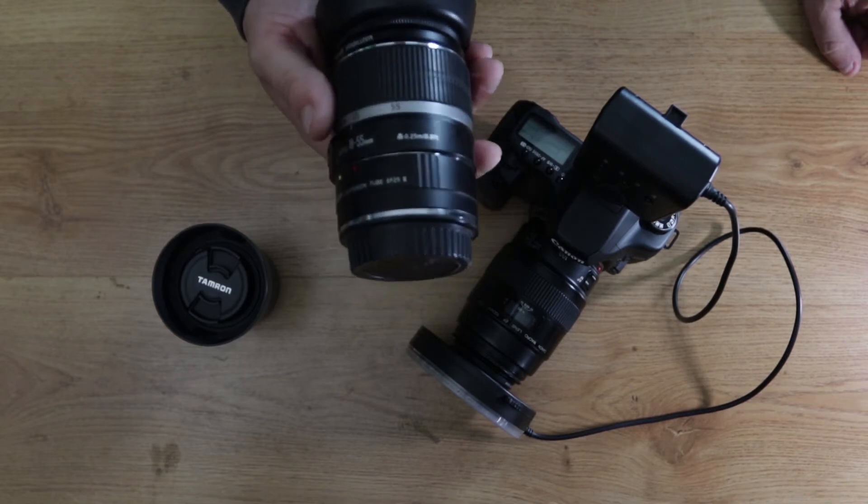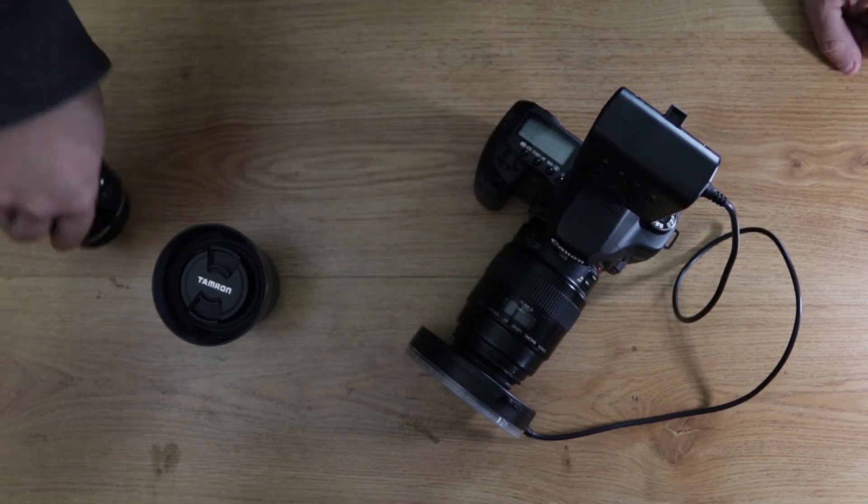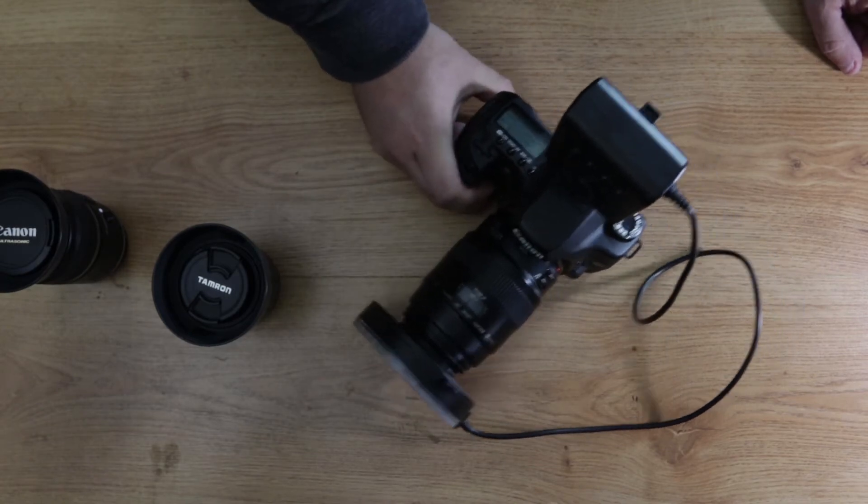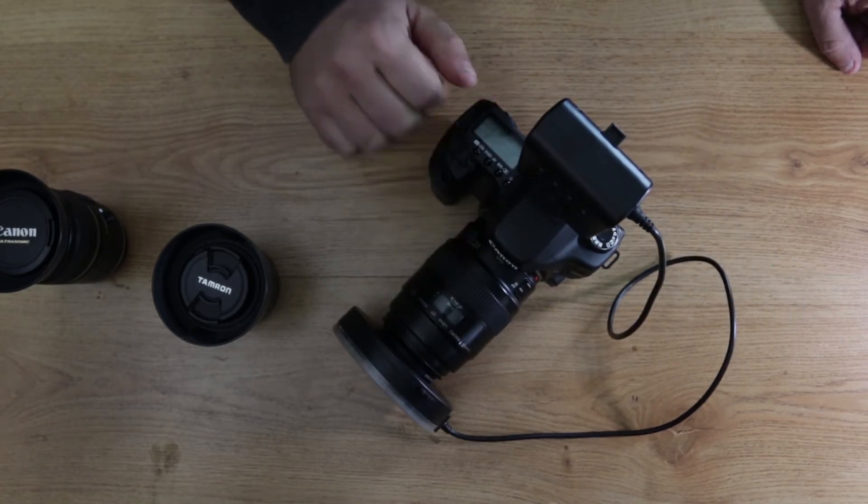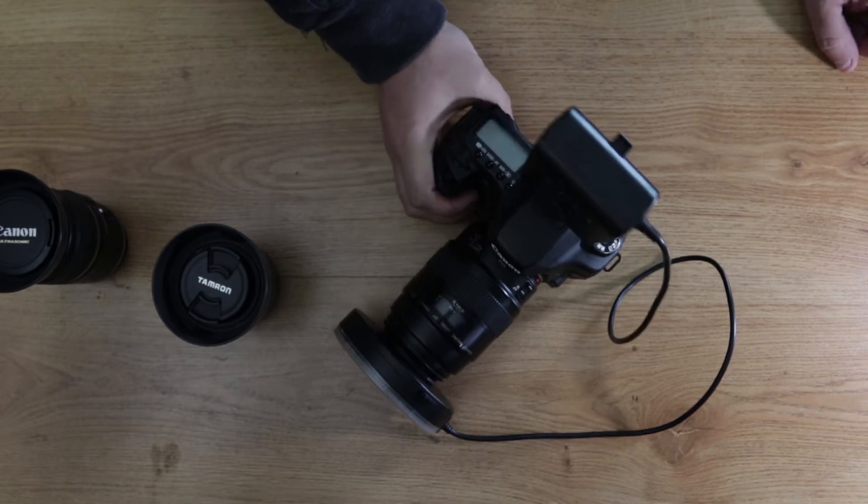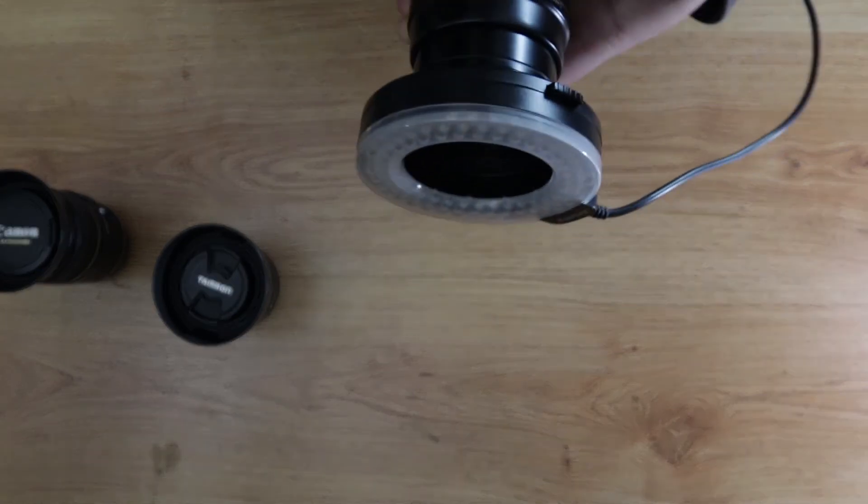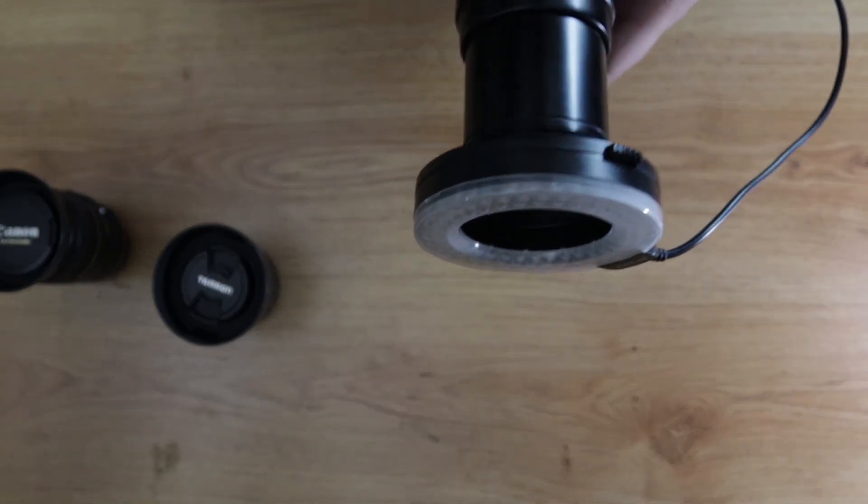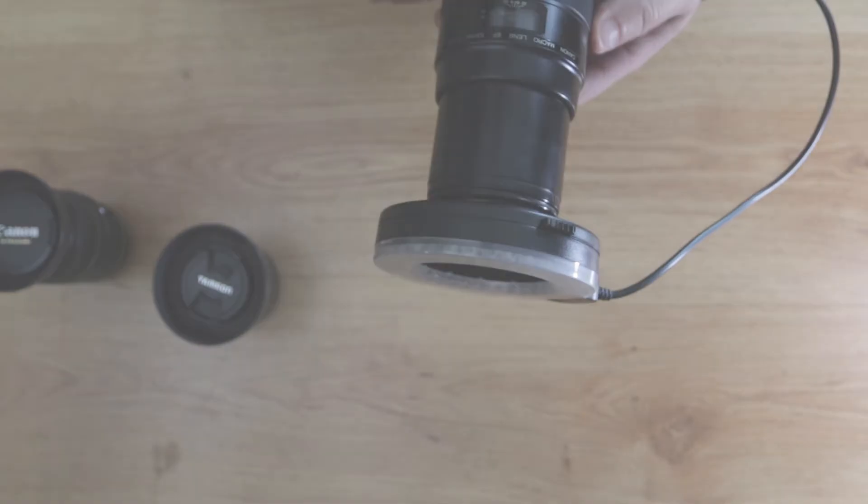And the Canon 100 millimeter f/2.8 lists a minimum focusing distance of right around 1 foot, or 0.307 meters.